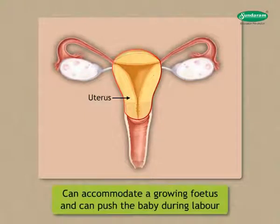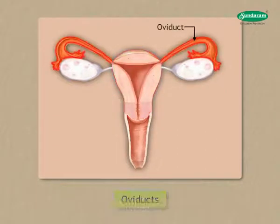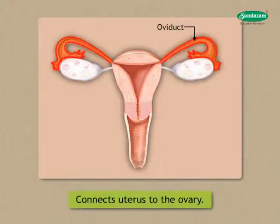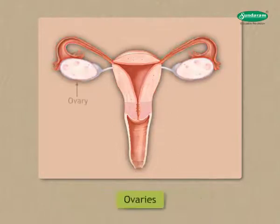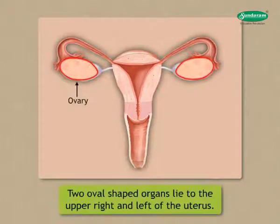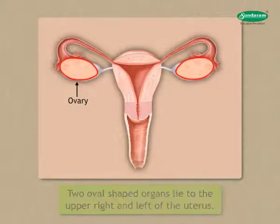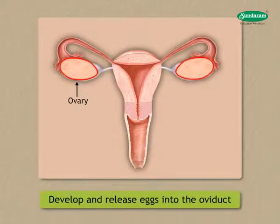The uterus is a muscular organ. Due to its strong muscles and ability to expand and contract, the uterus can accommodate a growing fetus and push the baby during labor. The oviduct connects the uterus to the ovary. The two oval-shaped ovaries lie to the upper right and left of the uterus, and they develop and release eggs into the oviduct.